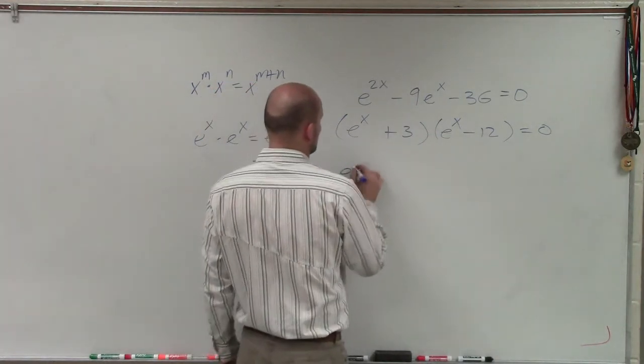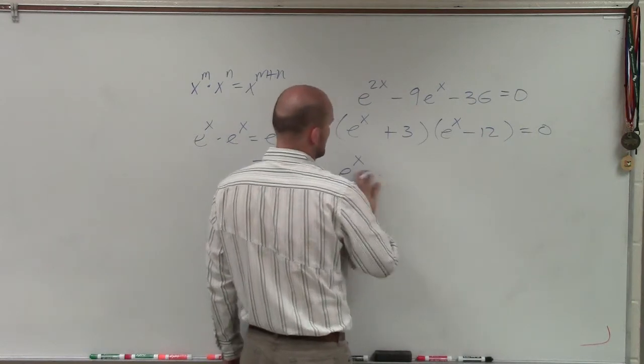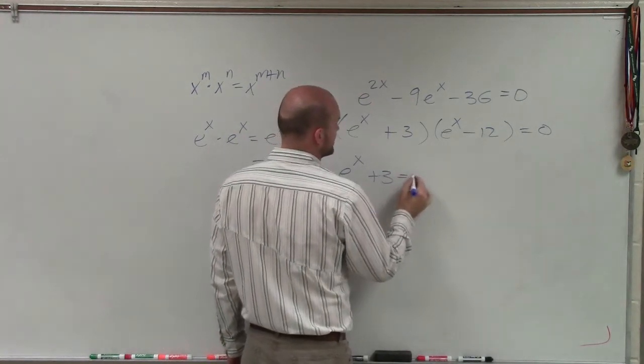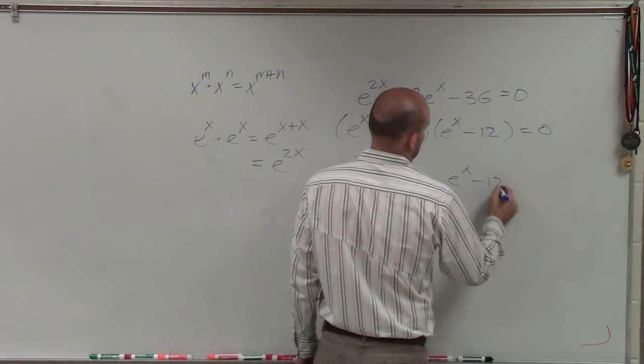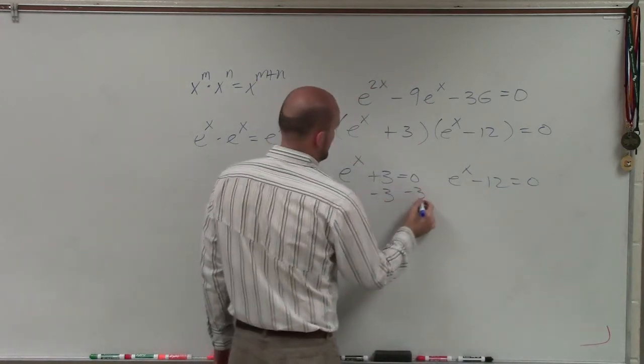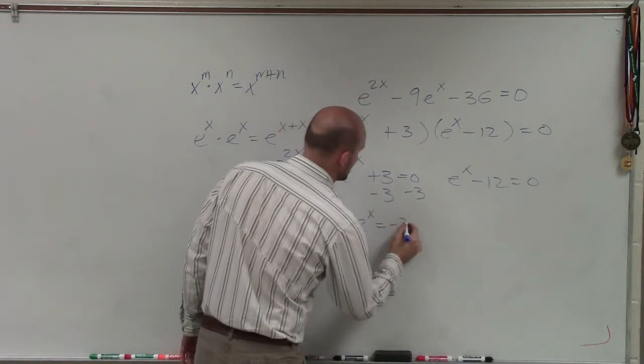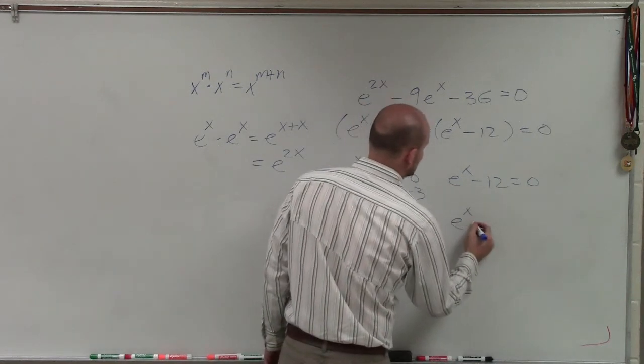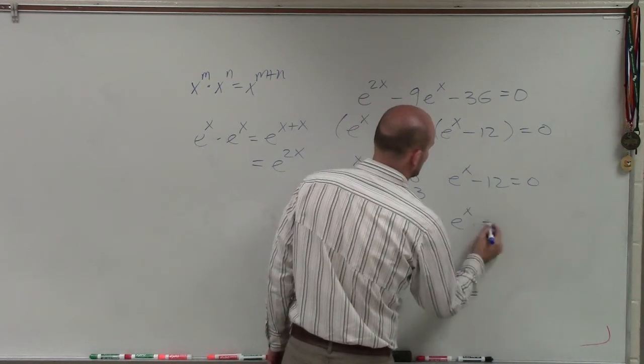Now, I can apply the zero product property. So I can set both of these equal to 0, all right? And then I solve. So I have e to the x equals negative 3, and I have e to the x equals 12.